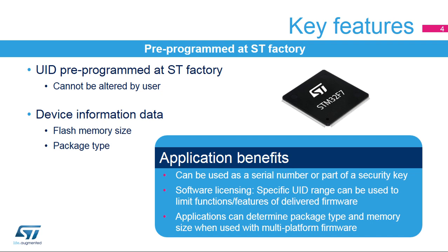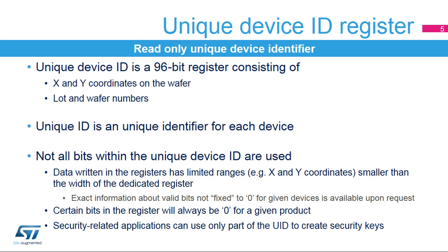Multi-platform firmware can use the UID to determine package type and memory size for managing application functions and features. The unique device identifier is a 96-bit register that contains the coordinates of the die on the wafer, lot number, and wafer number. This identifier is unique for each device manufactured by ST.